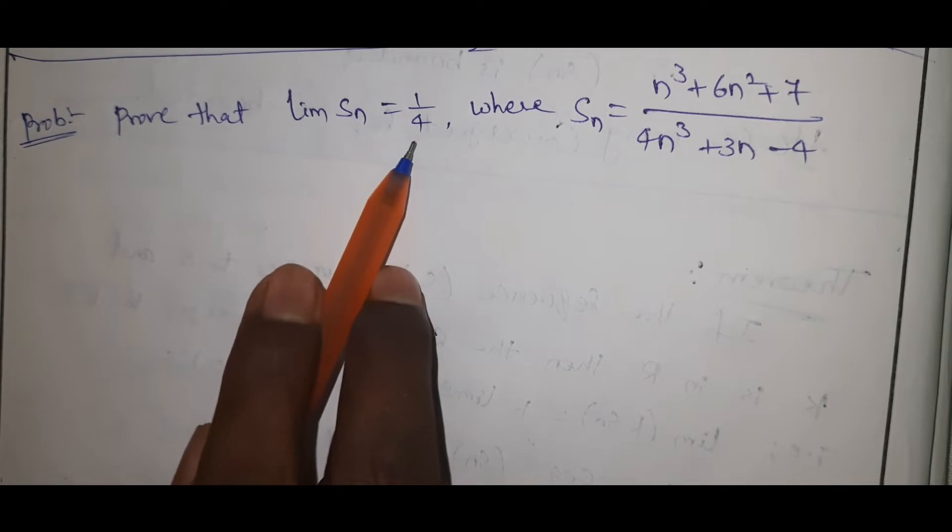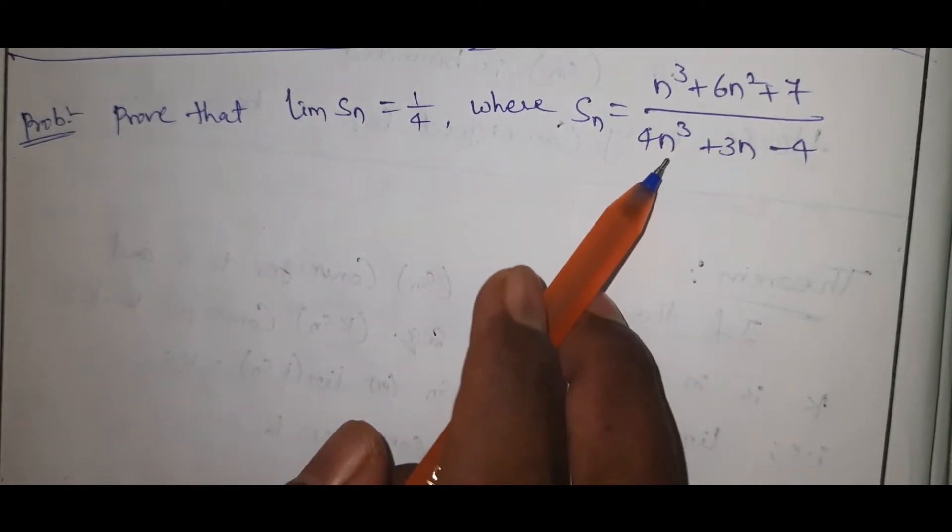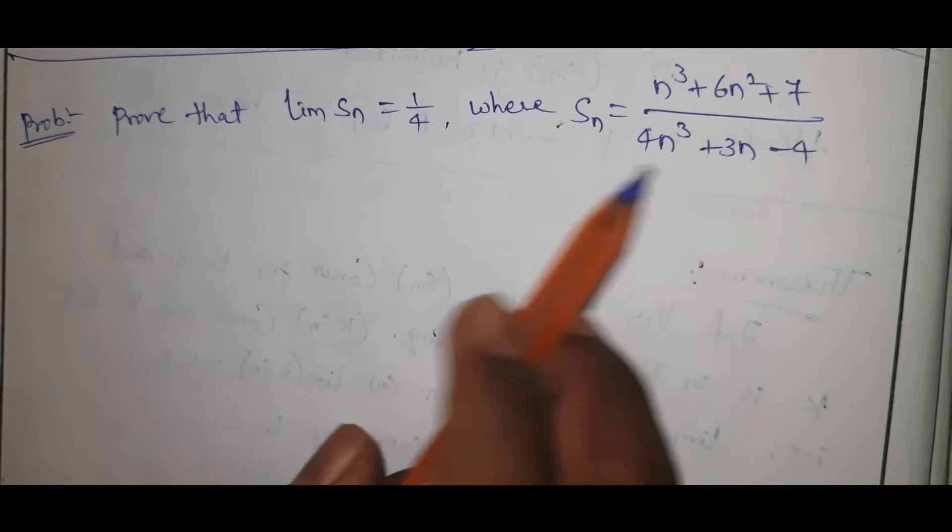Prove that limit Sn equals 1 by 4, where Sn equals n cube plus 6n square plus 7 by 4n cube plus 3n minus 4.